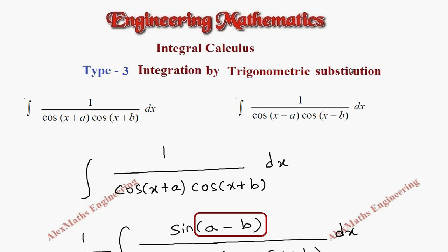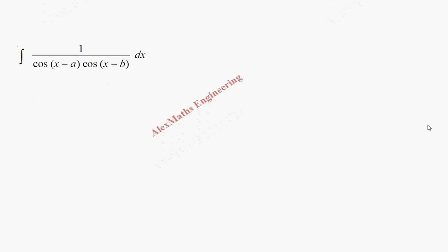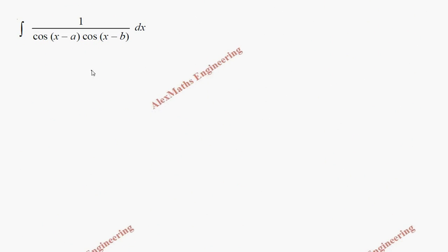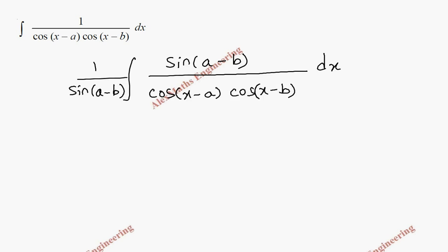Coming to the second problem, we have a similar form but the angles are (x-a) and (x-b). In the first problem we had (x+a) and (x+b), so we follow almost the same procedure. In the numerator, we introduce the constant sin(a-b), and to compensate, we divide outside by 1/sin(a-b) into dx, with the denominator written as it is.